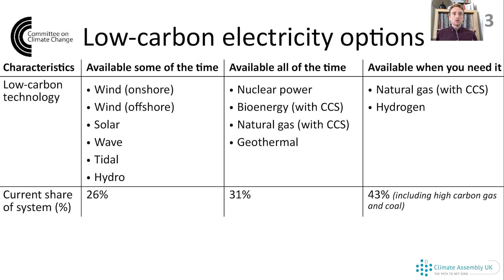Looking at the last column on the right hand side, we have flexible gas generation. This is really useful because it's available when you need it - it can increase or decrease output in a matter of seconds. Currently this is high carbon gas and coal, quite a big proportion of the system at just under half or 43%. To be low carbon, you'd have to capture emissions from burning gas in a process called carbon capture and storage and bury them underground, or use a gas without any carbon in it, such as hydrogen. We don't currently have any power stations that do that in the UK.